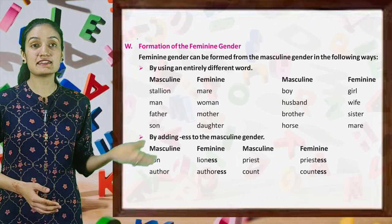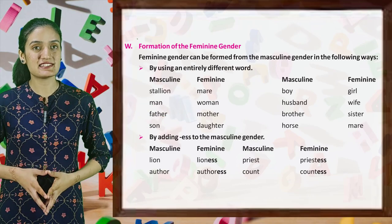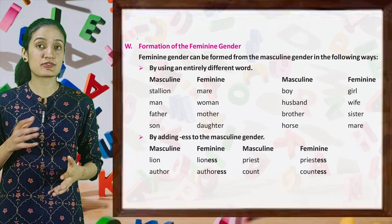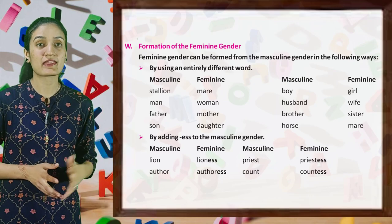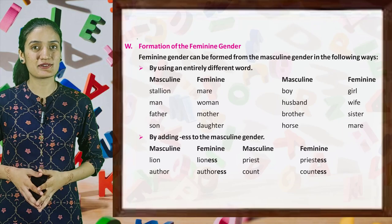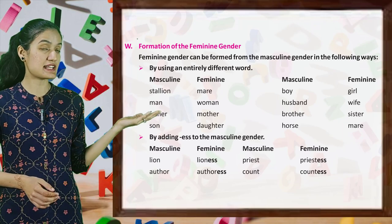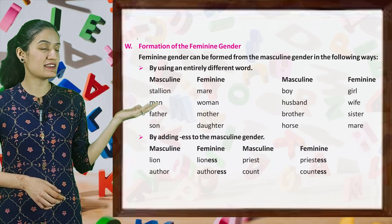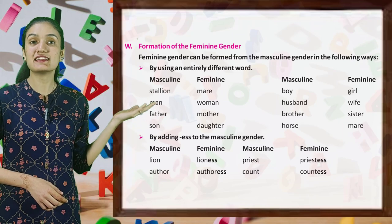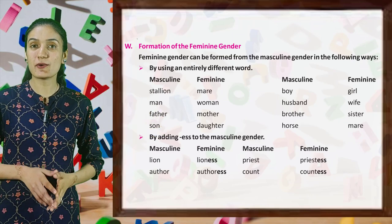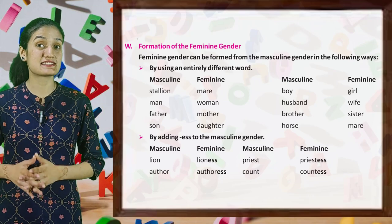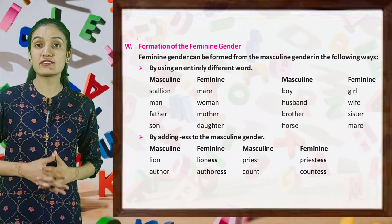Now next is the formation of feminine gender. Feminine gender can be formed from the masculine gender in the following ways. By using an entirely different word: stallion → mare, man → woman, father → mother, son → daughter, boy → girl, husband → wife, brother → sister, horse → mare.